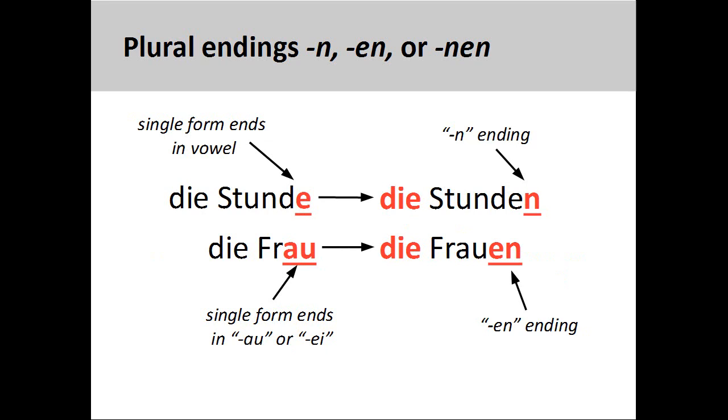Nouns ending in a vowel such as Stunde, hour, will also only add an -n. However, if the noun ends in a diphthong, -au or -ei, such as Frau, woman, then -en is added: Frauen.